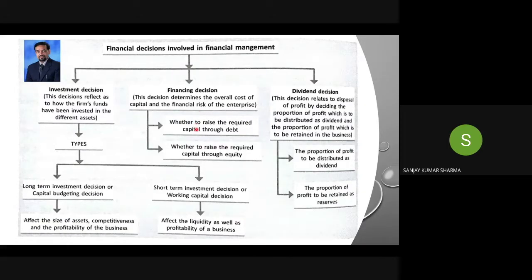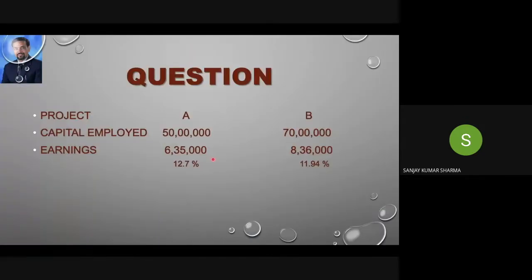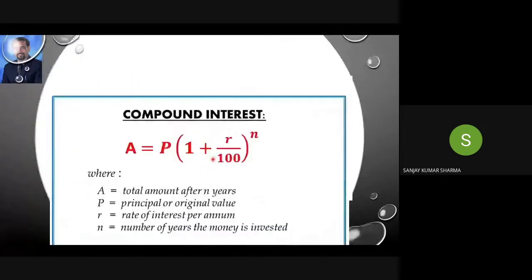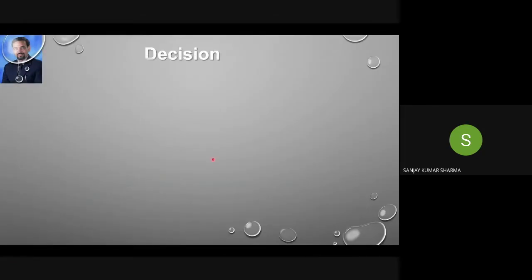So what are the decisions which a financial manager has to take? He has to decide whether to raise the required capital through debt, meaning by taking a loan, or through equity. These are the two major decisions in the financing decision. The present value concept was also explained so that you have a good idea about this.